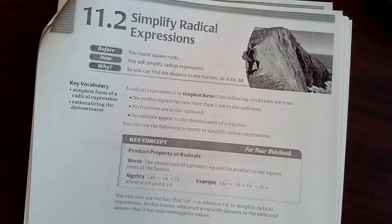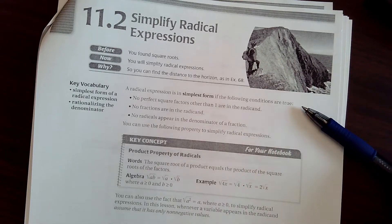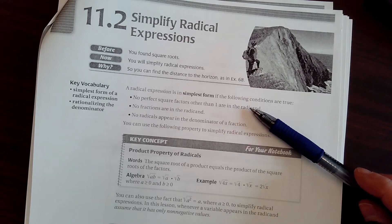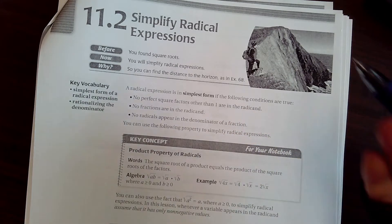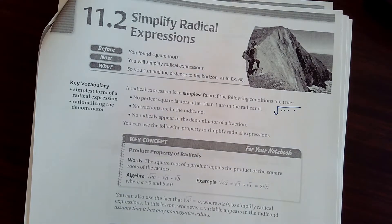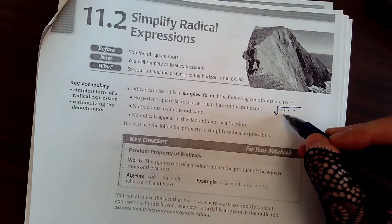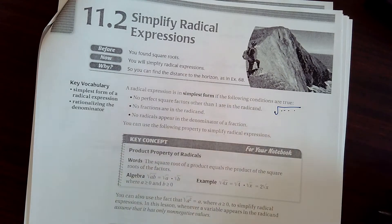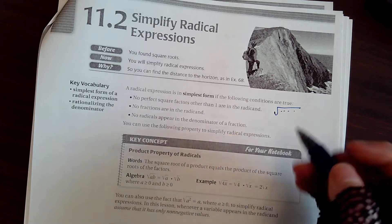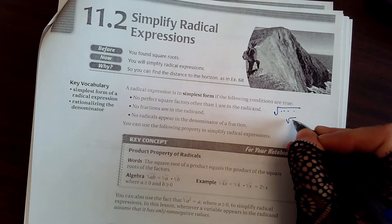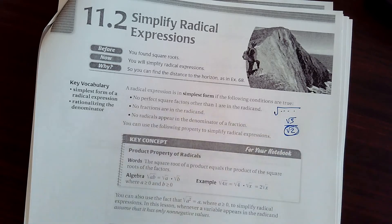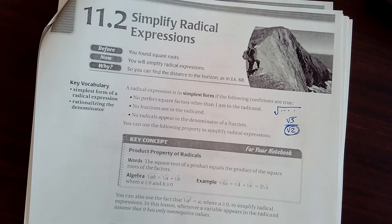To make them in simplest form: no perfect squares other than 1 are in the radicand — the part underneath the radical sign. No fractions are in the radicand, so you can't have a fraction inside. And no radicals appear in the denominator of a fraction. There's a way to deal with that.